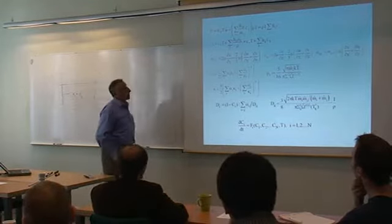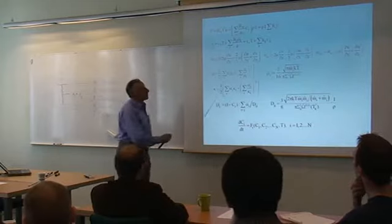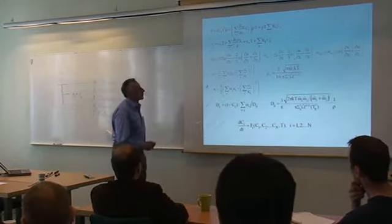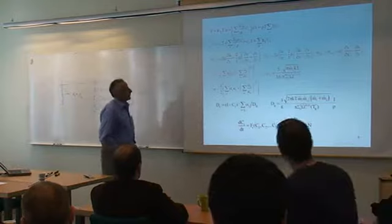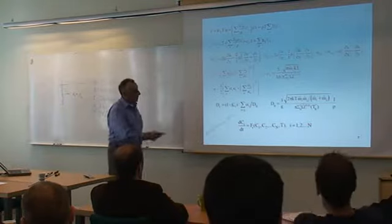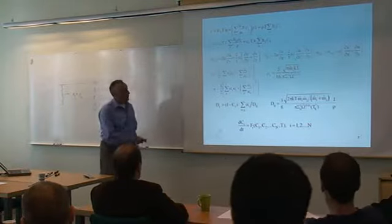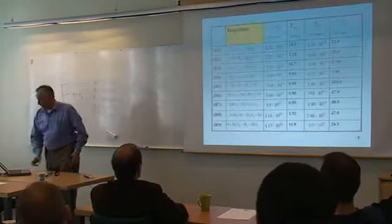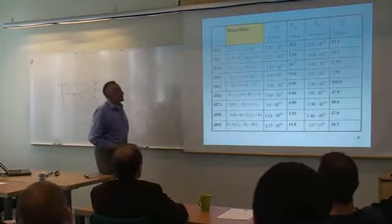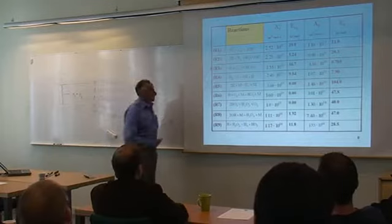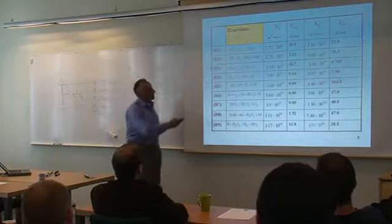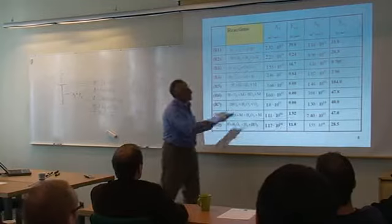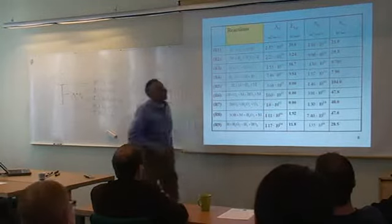Turbulence is only in the boundary layer. The transport coefficients — viscosity, thermal conduction, diffusion coefficient — are computed from kinetic theory, and the concentration equations are solved for the species. The reactions involved in the process are nine reactions with pre-exponential coefficients and activation energies.